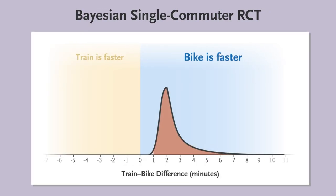But with the Bayesian approach and further analysis of the posterior probability distribution, you're able to see that there's only a 50% chance that biking is more than two minutes faster.